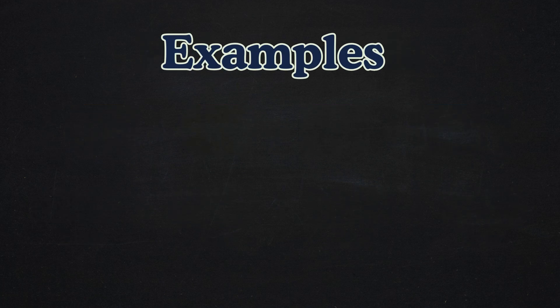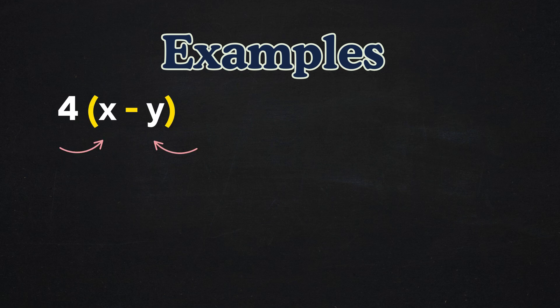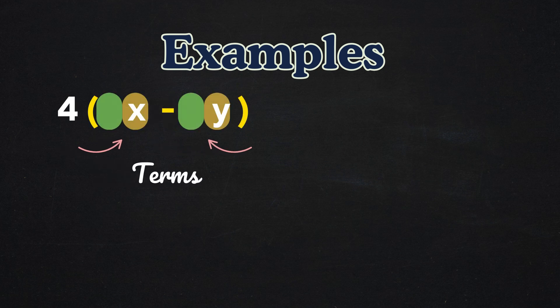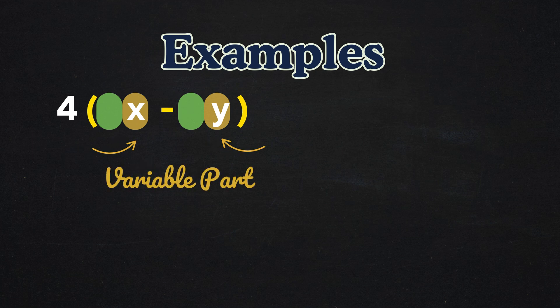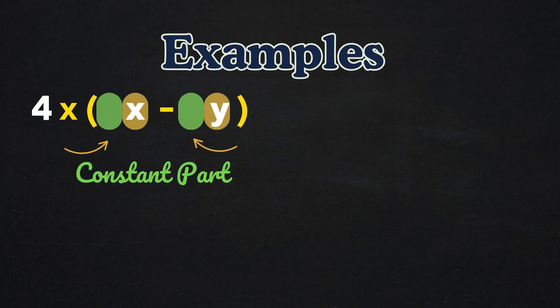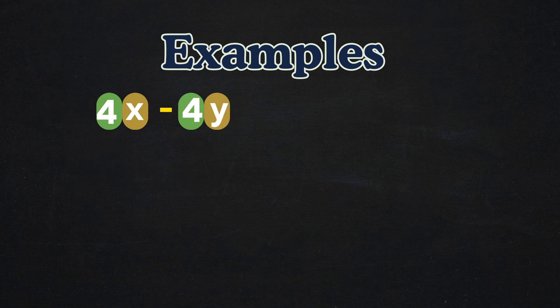For instance, consider this simple expression, 4 times x minus y. Here, x and y are terms in the polynomial x minus y. Each term contains a variable part but no constant number. Applying the distributive property gives us 4x minus 4y. But what if the polynomial is a little more complex?